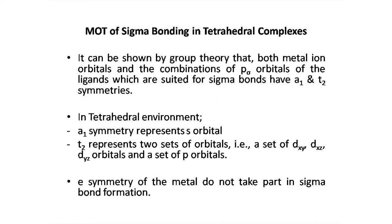When studying tetrahedral complexes, the term 'g' is omitted here — it is not a centrosymmetric molecule like octahedral complexes. Whenever we refer to the symbols, we call them A1, T2, E, or T1. Therefore, A1 represents non-degenerate orbitals, and T represents triply degenerate orbitals — DXY, DYZ, and DZX. The same T2 symmetry is also utilized for 3P orbitals in tetrahedral complexes; T2 symmetry is shared by the P as well as the 3D orbitals.